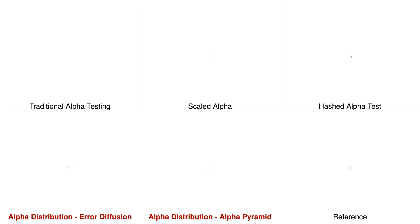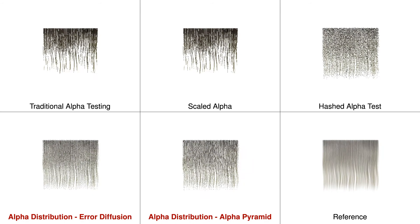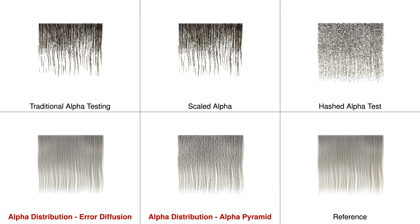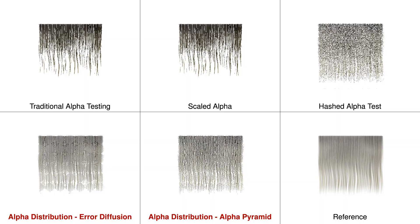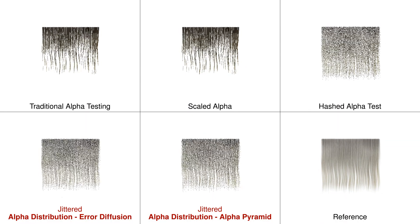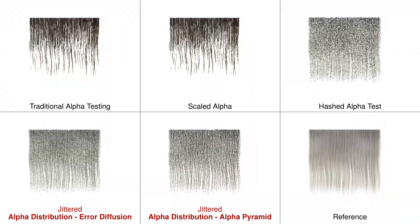Perhaps more importantly, alpha distribution simply modifies the alpha channel of a texture, so it needs no additional shader code. Therefore, the shader code is identical to traditional alpha testing, unless one would like to add jittered sampling to further improve the results.